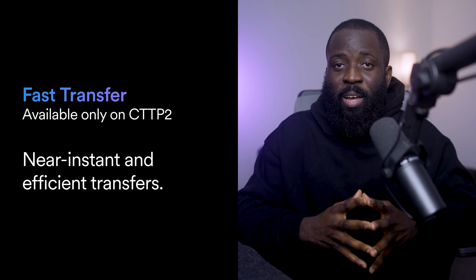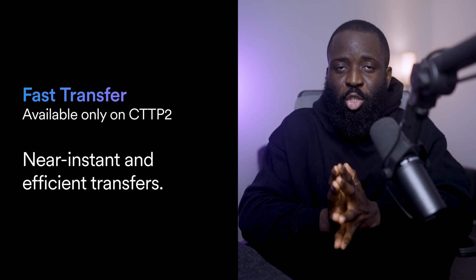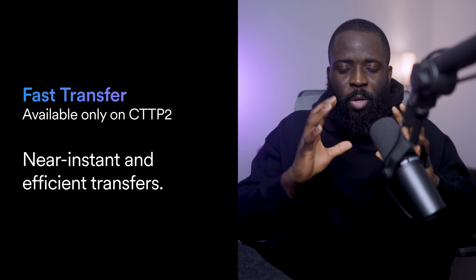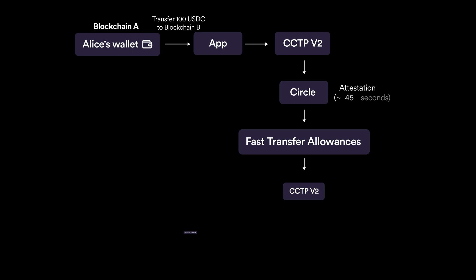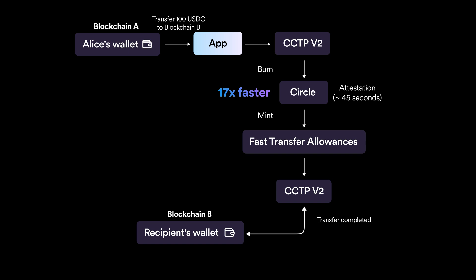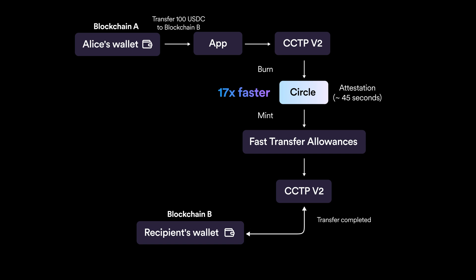Fast transfer, available only in CCTP v2, offers near-instant and efficient transfers. If your user needs near-instant liquidity, you as a developer can integrate fast transfers. Here's how it works: your application initiates a fast transfer when a user like Alice requests it, specifying the recipient wallet address on blockchain B. Then USDC is burned on blockchain A, and Circle quickly attests to the burn event after soft finality — just seconds — skipping the need to wait for full finality.